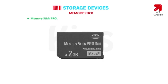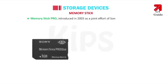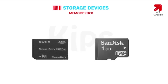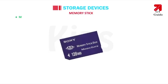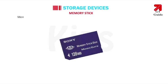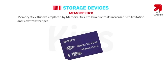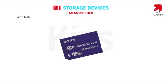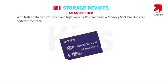Memory Stick PRO was introduced in 2003 as a joint effort of Sony and SanDisk, and is available in storage sizes up to 1 GB. Memory Stick Duo and Memory Stick PRO Duo are smaller versions of the Memory Stick and Memory Stick PRO. Memory Stick Duo was replaced by Memory Stick PRO Duo due to its size limitations and slow transfer speed. With faster data transfer speed and high-capacity flash memory, Memory Stick PRO Duo perfectly meets the requirements of a portable digital device.